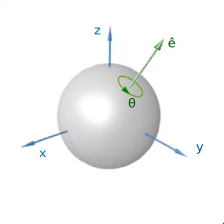A single multiplication by a versor, either left or right, is itself a rotation, but in four dimensions. Any four-dimensional rotation about the origin can be represented with two quaternion multiplications — one left and one right — by two different unit quaternions.